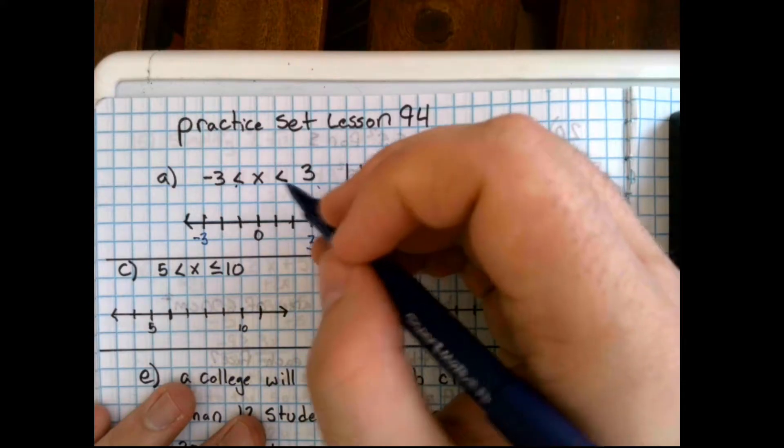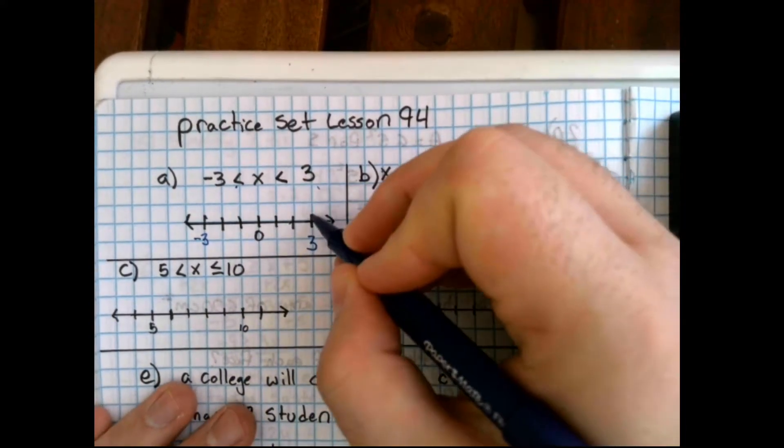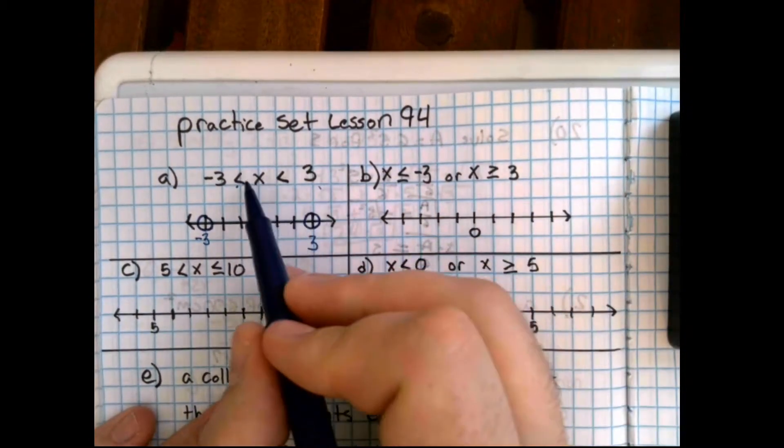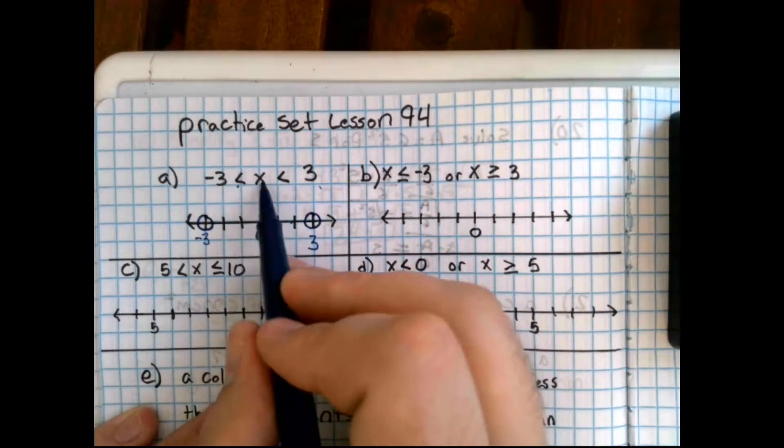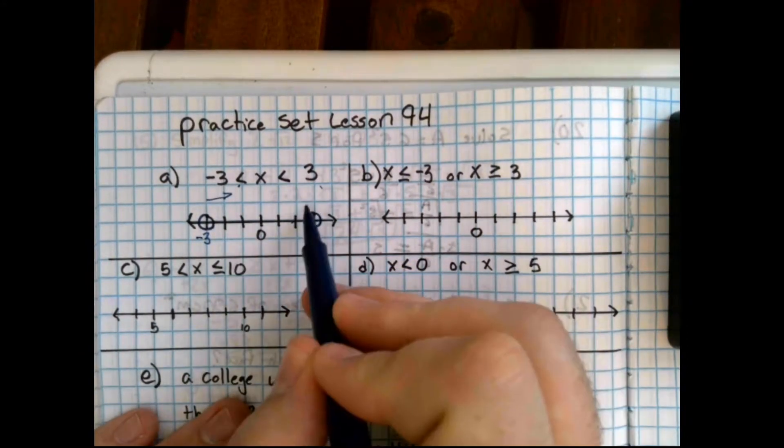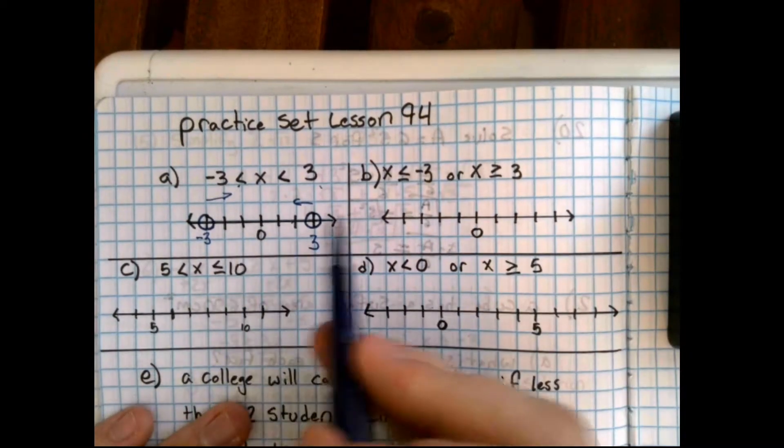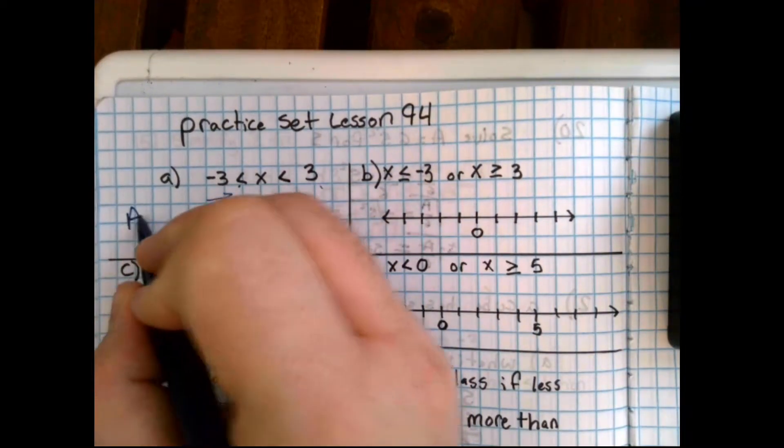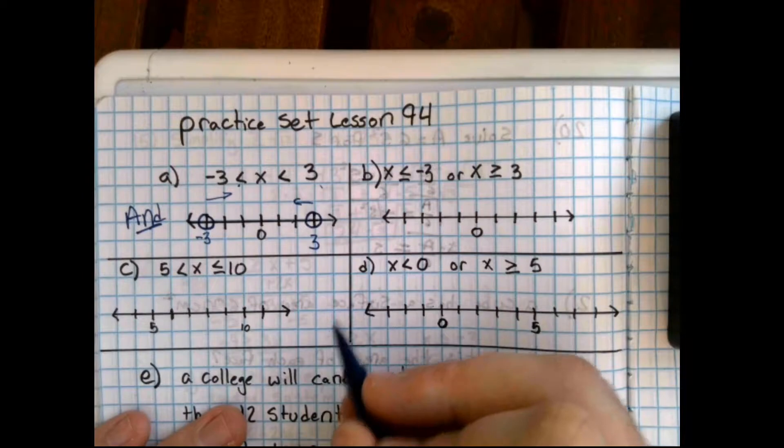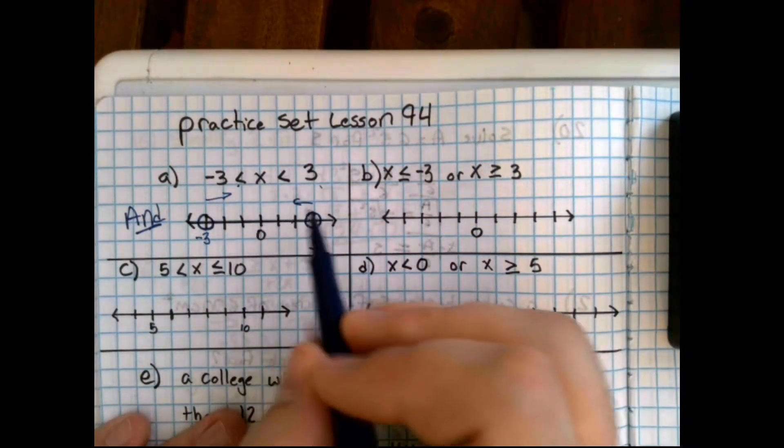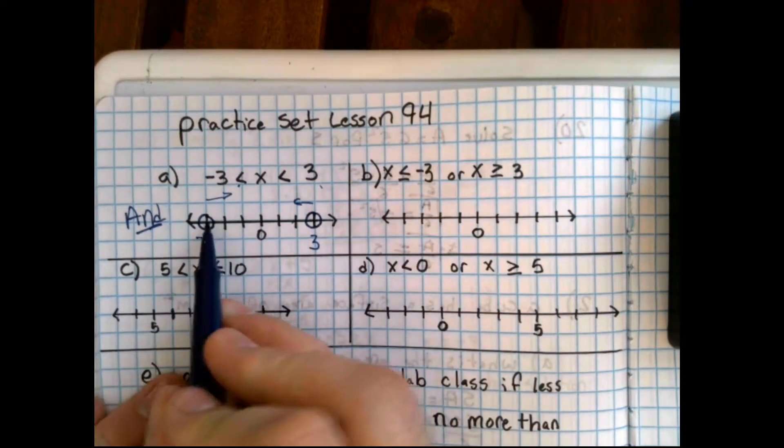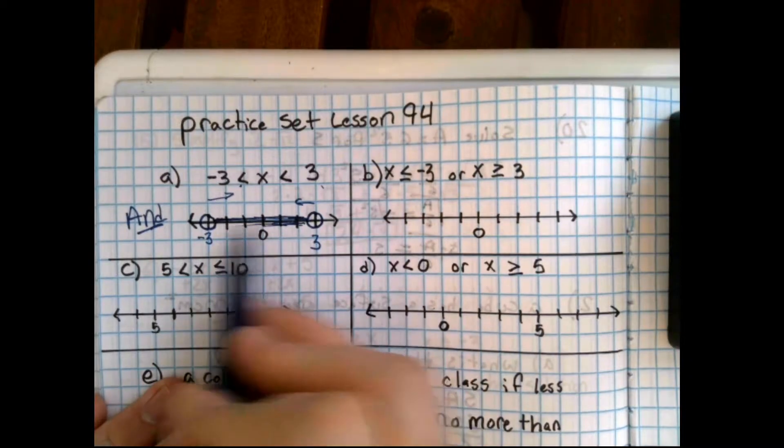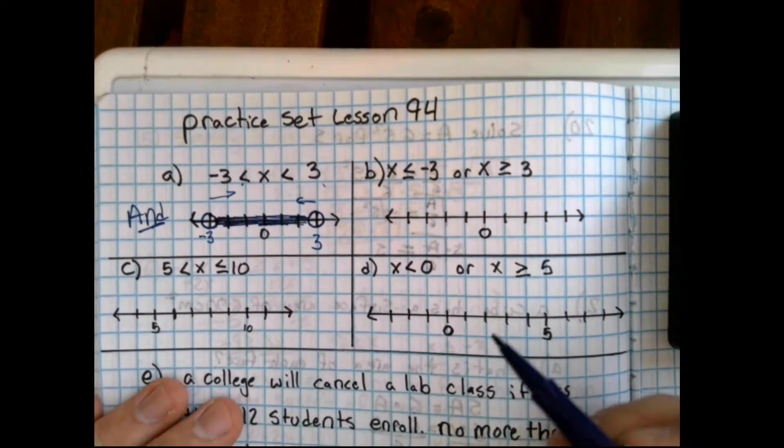With this, there are no equal to's, so they're both going to be open dots. Now, x is greater than negative 3, greater than means this one is going to the right. This one is less than, it is going to the left. The space, this is written as one solid function, so this is an and problem. So, where is it greater than negative 3 and less than 3? Well, it's in the space in between them. And that's practice set A.